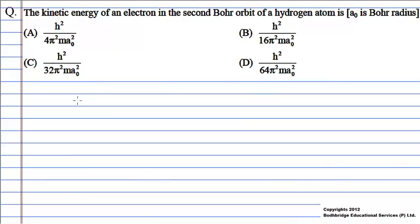We will use Bohr's postulate which is given by mvr equals nh upon 2π, where m is the mass of the electron, r is the radius of the orbit, h is Planck's constant, and v is the velocity of the electron.